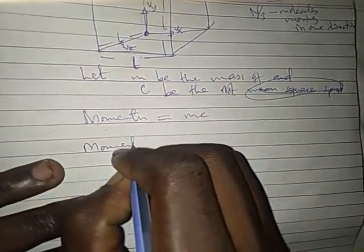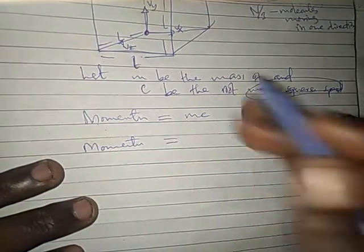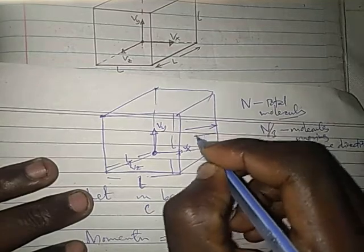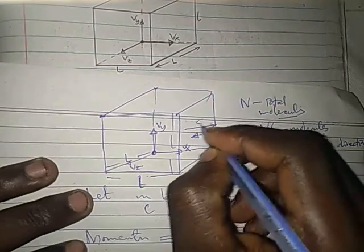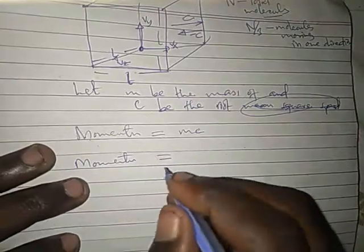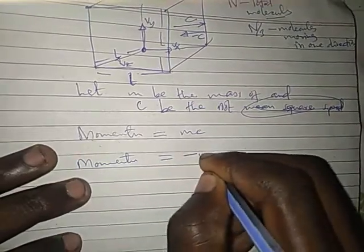And momentum after collision, because after collision, the particle rebounds. So, if its velocity when going is C, then its velocity when coming back is negative C. So, momentum after collision will be negative MC. That's momentum after collision.